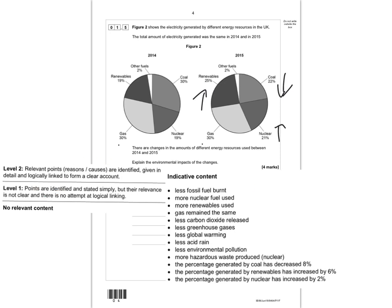The indicative content shows that less fossil fuels are burnt because coal goes down, meaning less carbon dioxide, less greenhouse gases, and less global warming — also less acid rain. More nuclear fuel means more hazardous radioactive waste to dispose of. More renewables also decreases carbon dioxide and greenhouse gases. Gas and other fuels remain the same. You could indicate the percentages: an 8% decrease in coal, a 6% increase in renewables, and a 2% increase in nuclear — the 6 and 2 give you the 8 decrease in coal. Link those ideas together logically to get the marks.